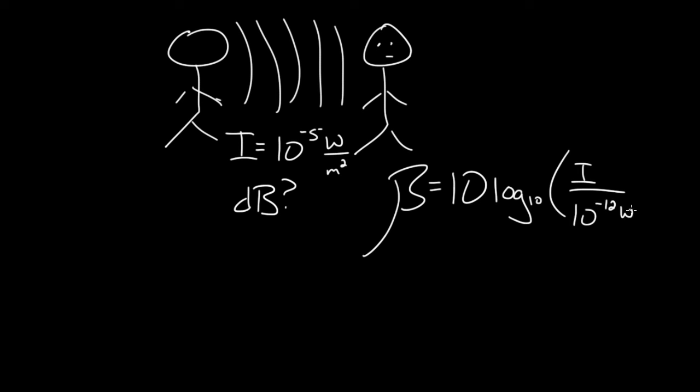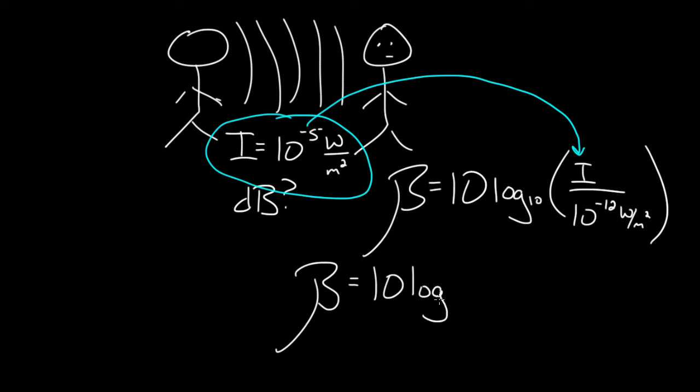Well, here's what we do. We use our formula for decibels. Number of decibels equals 10 log base 10 of the intensity over always 10 to the negative 12 watts per square meter because that's the softest sound we can hear. What do I get? 10 to the negative fifth is my intensity. So I plug this into here. And I'm going to get beta equals 10 times the log base 10 of 10 to the negative fifth, because that's my intensity, divided by 10 to the negative 12.